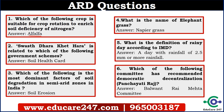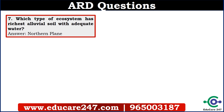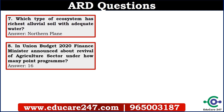The Balwant Raya Mehta committee was one of the earliest committees which suggested Panchayati Raj institution. The seventh question is: which type of ecosystem has the richest alluvial soil with adequate water? The answer is the northern plain — Indian northern plain has alluvial soil. The eighth question is: in Union Budget 2020, the finance minister announced the revival of the agriculture sector under how many point program? The answer is 16.